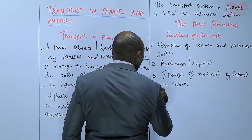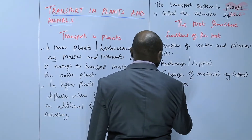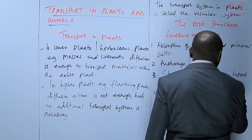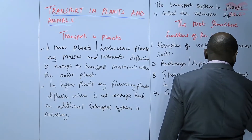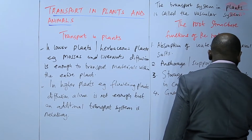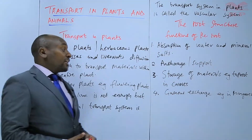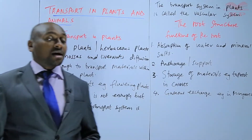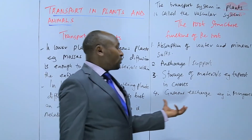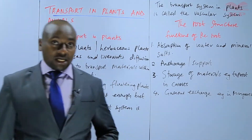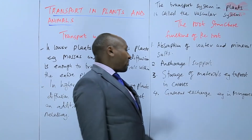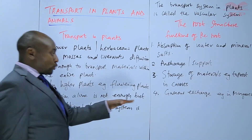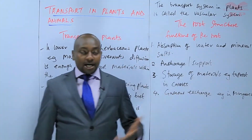If you take something like the tap root in carrots, it is a storage area — the tap root is swollen with food reserves stored there. So the root is also a storage area. We also have some roots that are modified for gaseous exchange, for example what happens in mangroves. Mangroves are plants that grow at the shores of the sea and oceans, and sometimes those plants are submerged by water during high tides, so they have roots specialized for gaseous exchange. Those are the four main functions of the root.